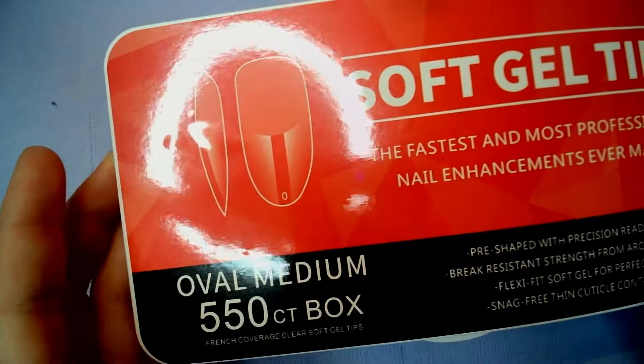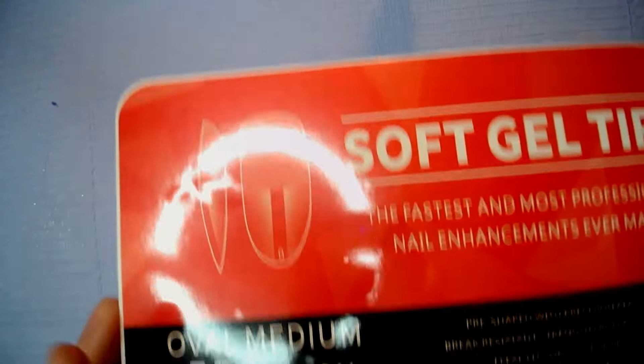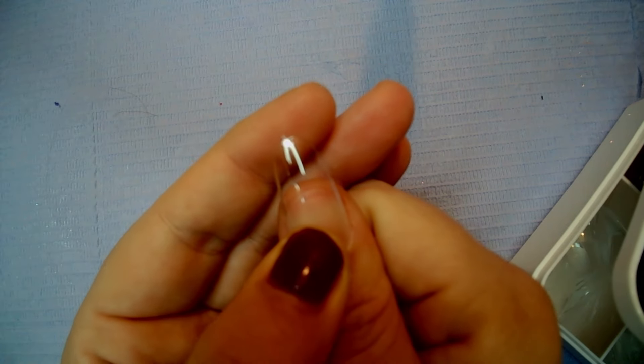Then the next one I got in oval medium. Same brand, same kind. Again, 550. And here we have the oval medium.